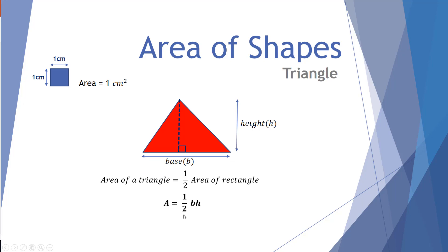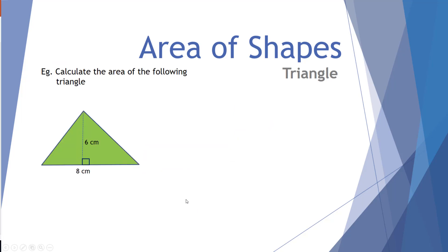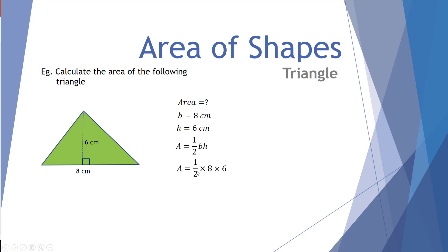Since the area of a rectangle is base times height, the area of a triangle is half of the base times the height. Quick example: a triangle 6 centimeters high and 8 centimeters on the base. Area equals question mark. Base equals 8 centimeters, height equals 6 centimeters. The area of a triangle is half the base times height. Half of 8 times 6 gives a value of 24 centimeters squared.